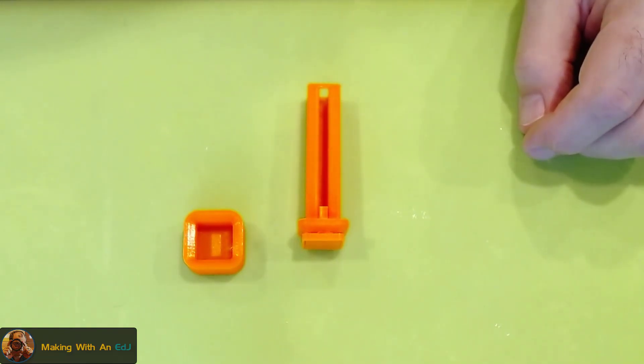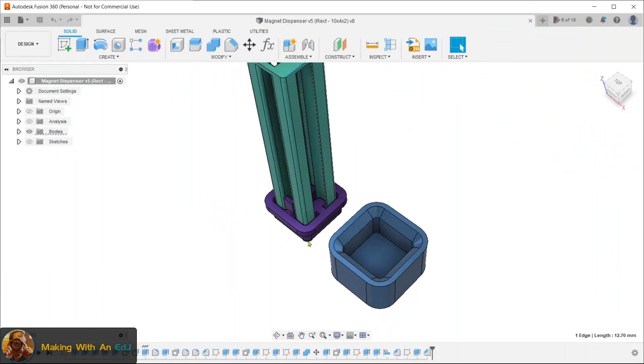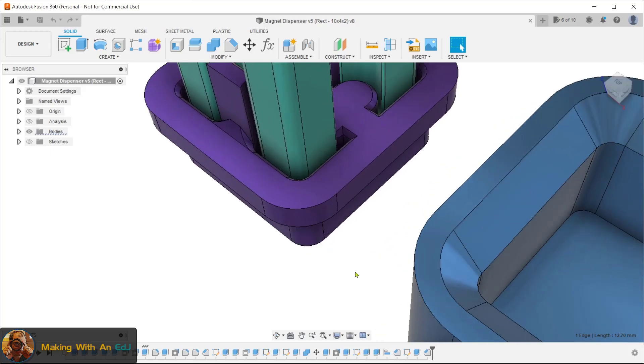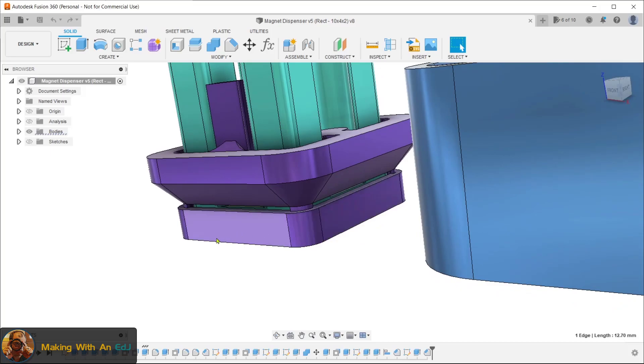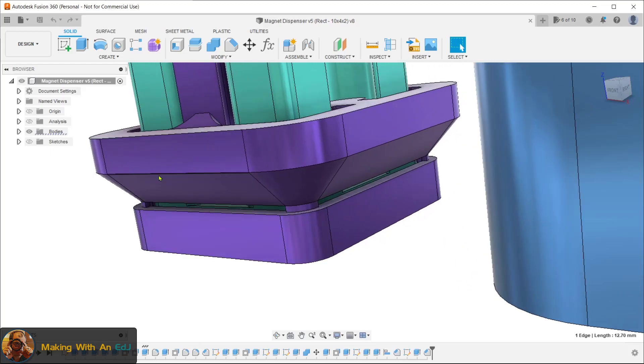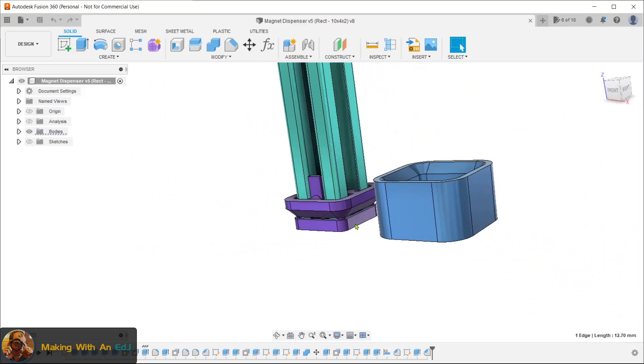So let me go back to Fusion 360 and show you I modeled in print-in-place supports. This ring is a support for the chamfered angle here, and you can see the four corners are attached to the chamfer. So this will break loose very easy.